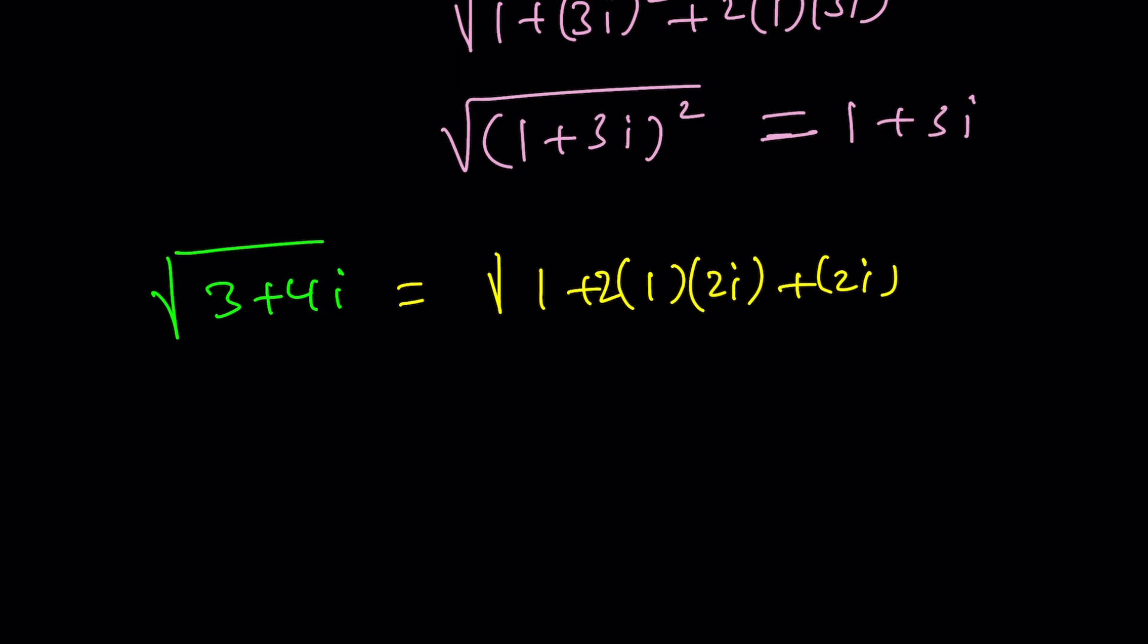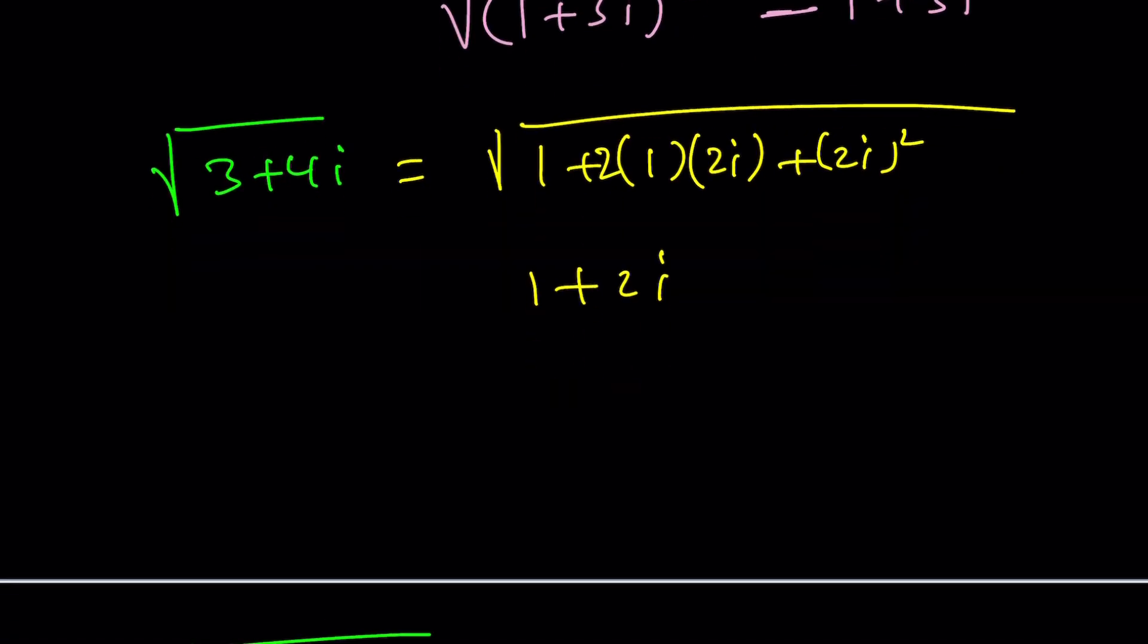But this is basically one plus two times one times two i. And this is two i squared. Yes. It was supposed to be one plus two i. Not two plus. Am I making the same mistake? Oh it's four plus one. Never mind. Over and over I'm making the same mistake.